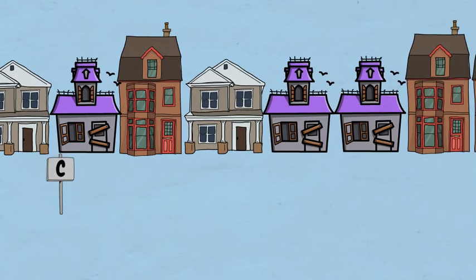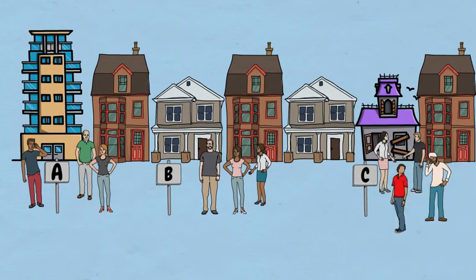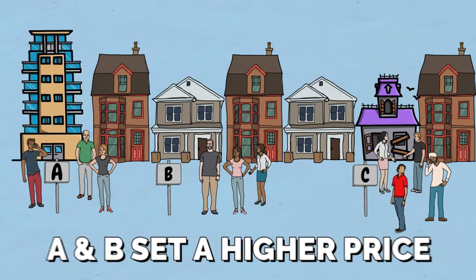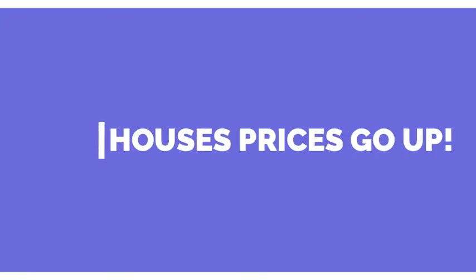Then group C comes along and homeowners in groups A and B know that they can sell them for a higher price than what they originally paid. House prices overall go up.